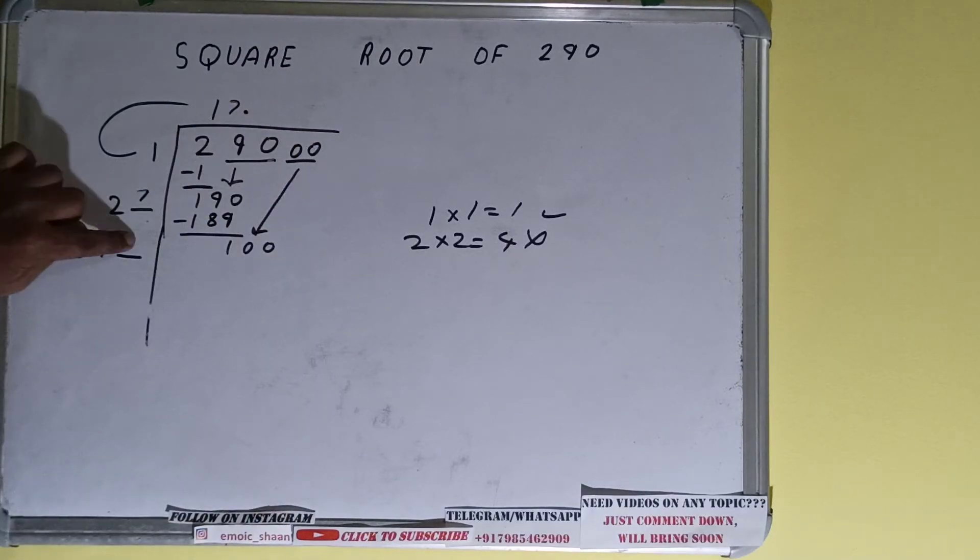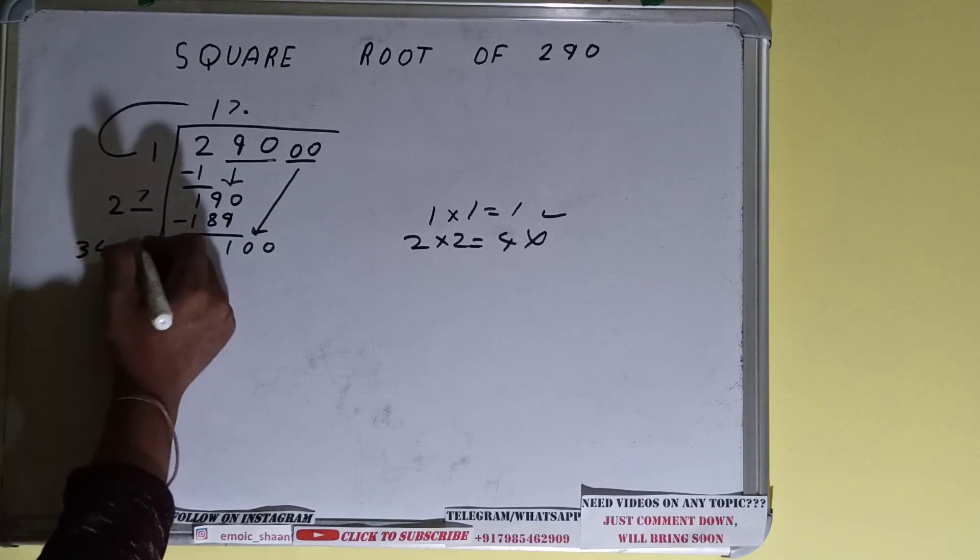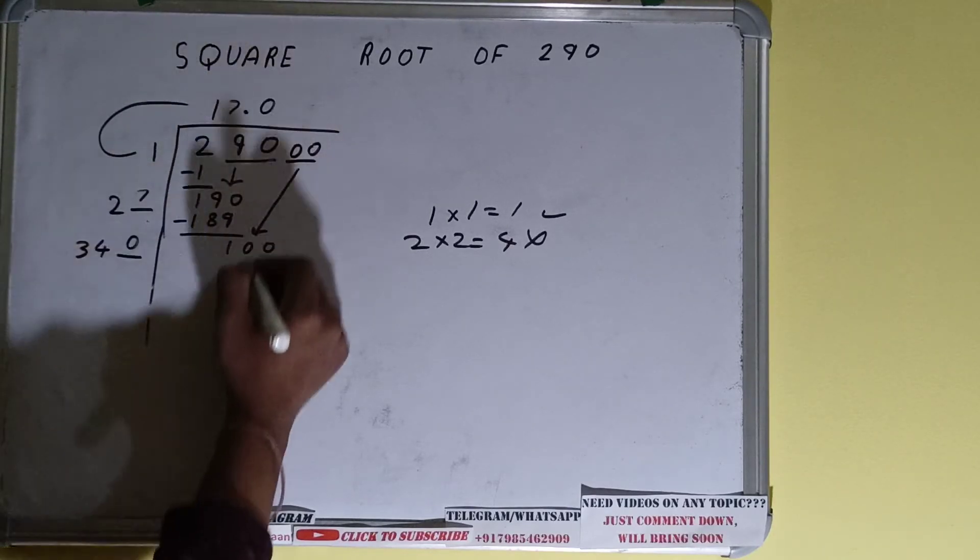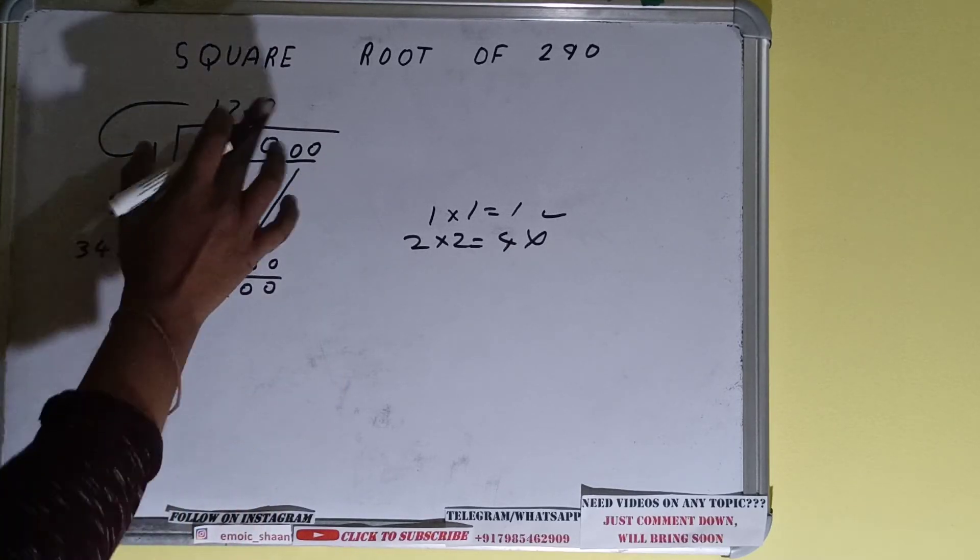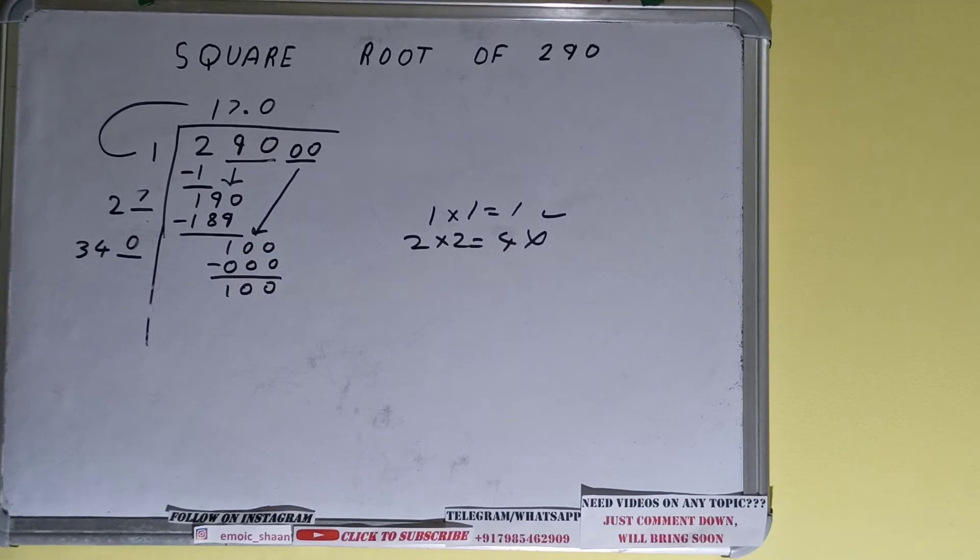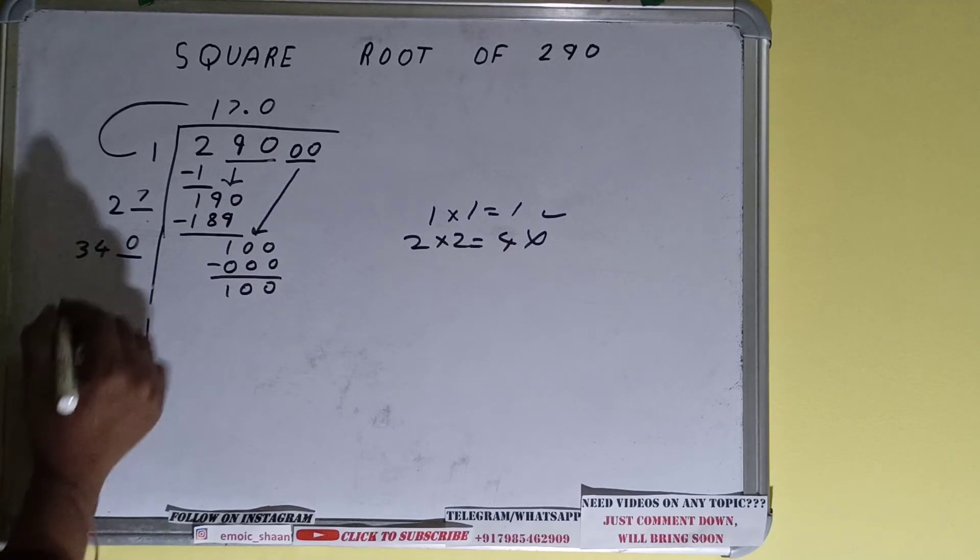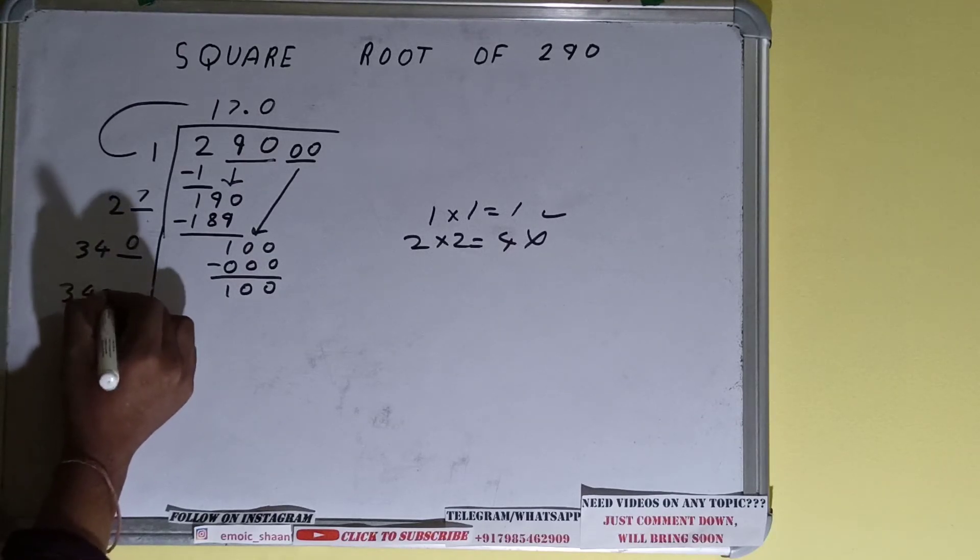Now even if I put one also then also I'll get a number greater than 100, so we cannot put one. We have to put zero. So zero here and zero here, subtract it. Again 100 will be left. And this 340×0 we did right, so add both. So 340 plus 0 will be 340 again and keep one digit extra.